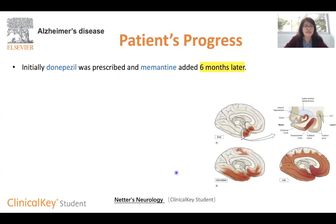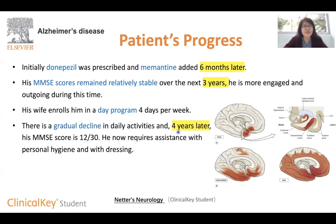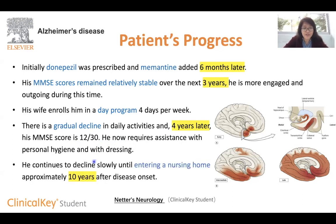Now we'll see how the patient progressed. Initially, donepezil and memantine were prescribed — we'll learn more about these medications later in the video. The patient's MMSE scores remained relatively stable over the next three years, during which he was more engaged and outgoing, and was enrolled in a day program four days per week. However, four years later, there was a gradual decline in daily activities — the patient now needs help with personal hygiene and dressing, and his MMSE score dropped to 12 out of 30. Finally, after 10 years from disease onset, he was placed in a nursing home.